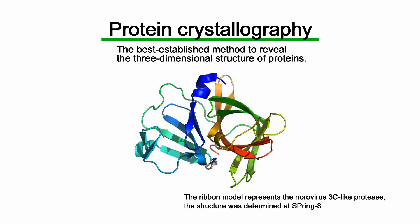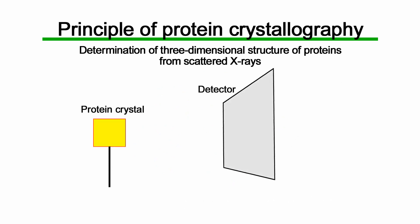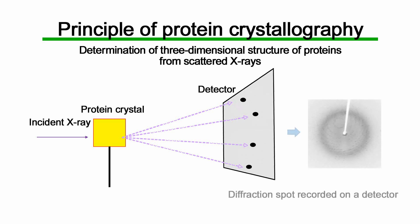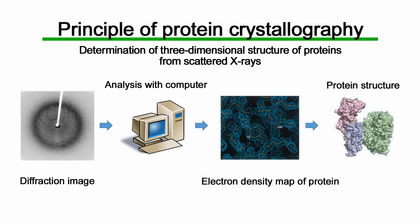The three-dimensional structure of proteins can be determined at Spring 8 by using the Protein Crystallography technique, which is the best established method for the structural study of proteins. In this method, the protein structure is determined from the intensity distribution of scattered X-rays as a result of exposing a protein crystal to X-rays. The X-rays scattered by protein crystals are recorded as diffraction spots on the detector owing to the interference effect. The three-dimensional structure of protein molecules can be determined by accurately measuring and analyzing the intensity of the spots.